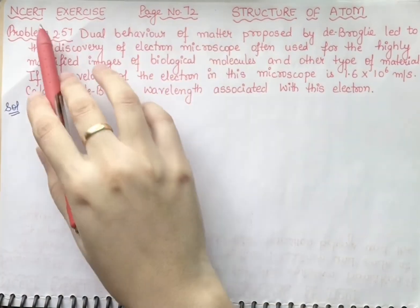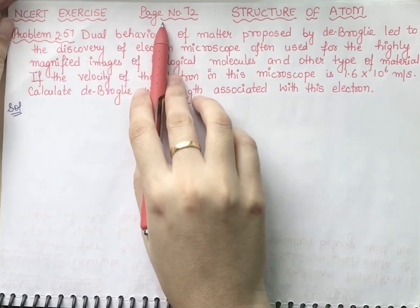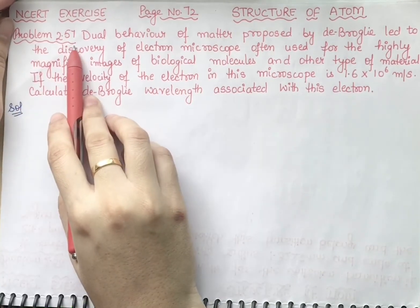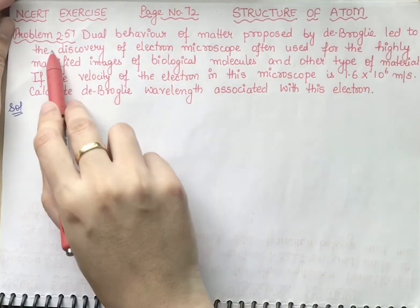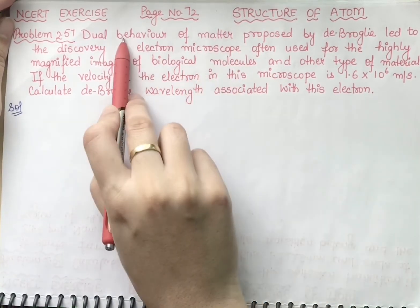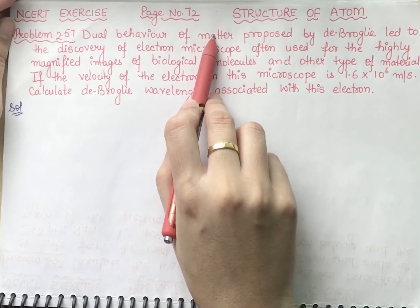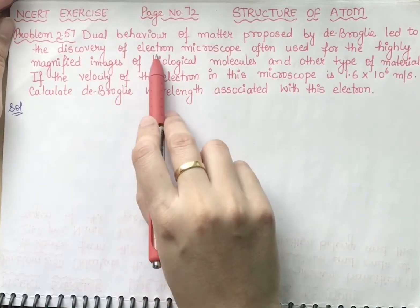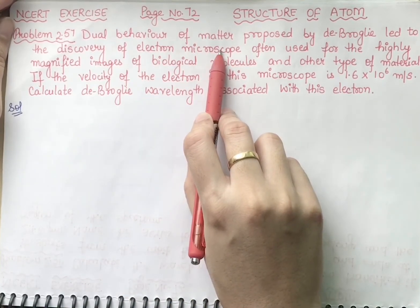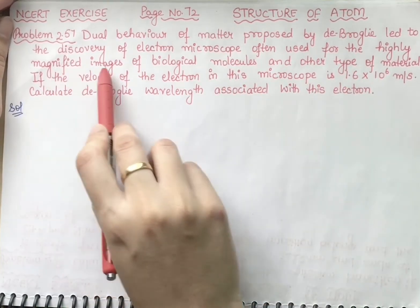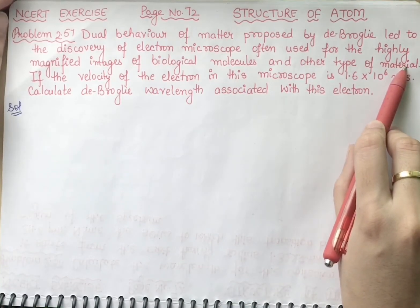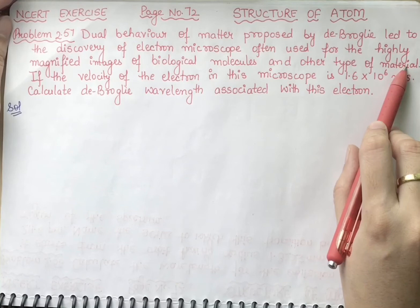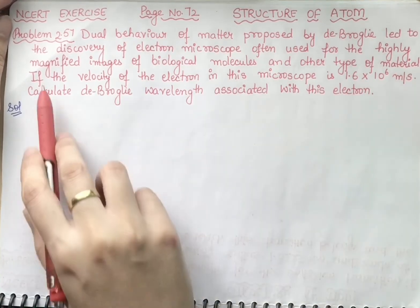Students, this is our NCERT exercise on page number 72, problem number 2.57. Let's go through the statement first. De Broglie's dual behavior of matter led to the discovery of the electron microscope. De Broglie has helped in the discovery of the electron microscope, which produces highly magnified images of biological molecules and other types of material. This is a very big discovery.